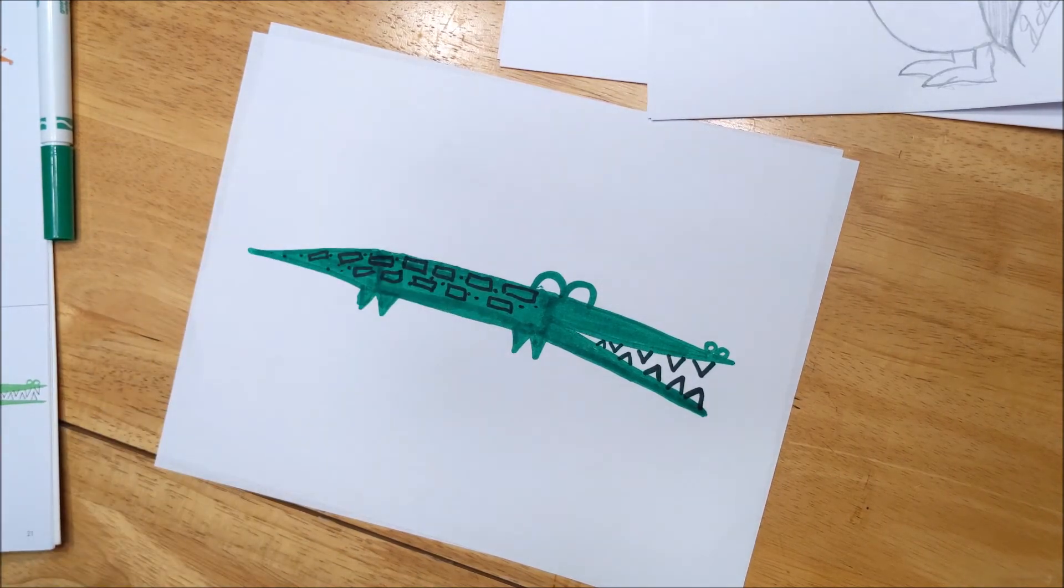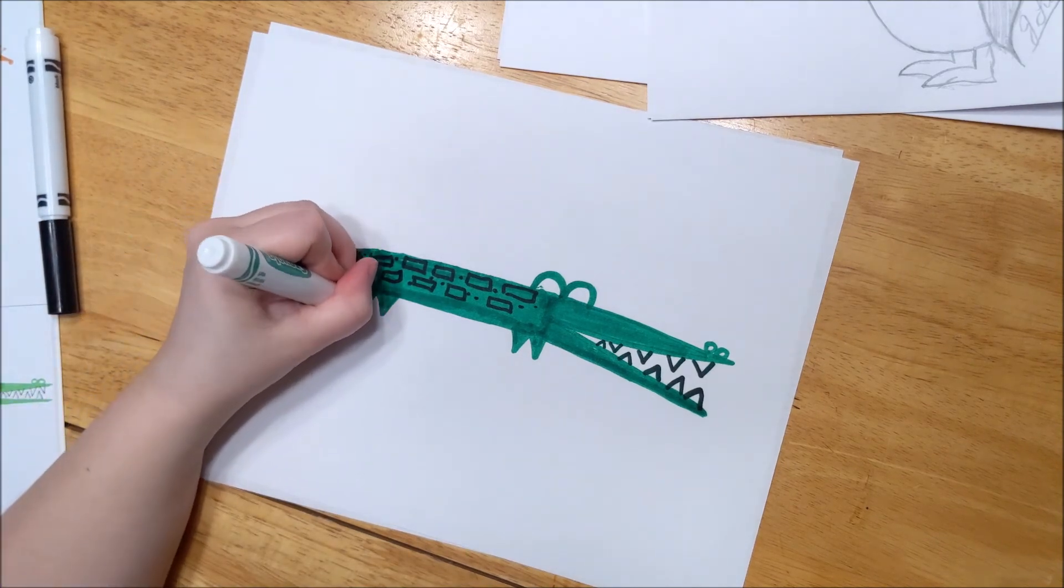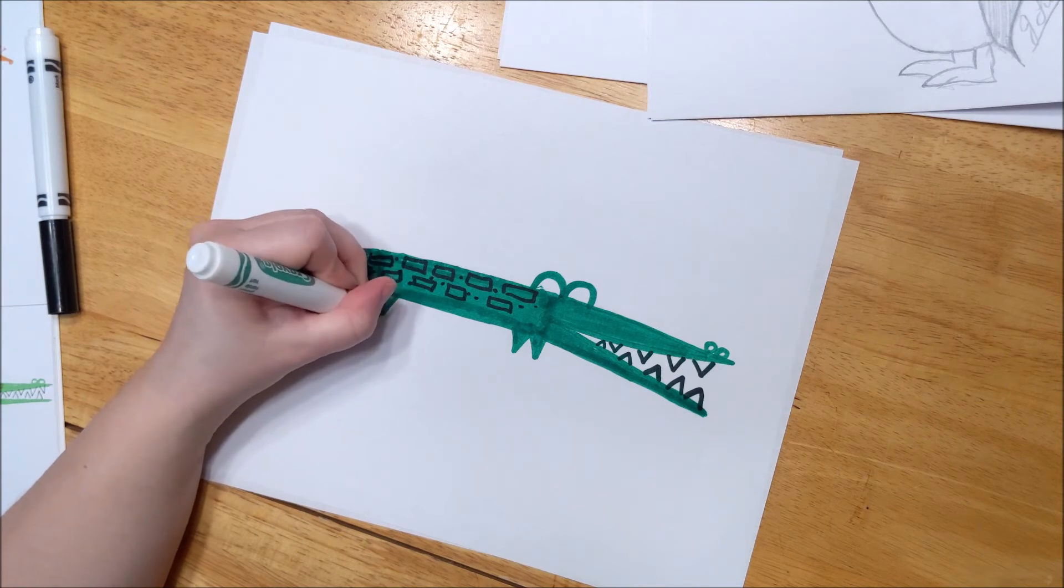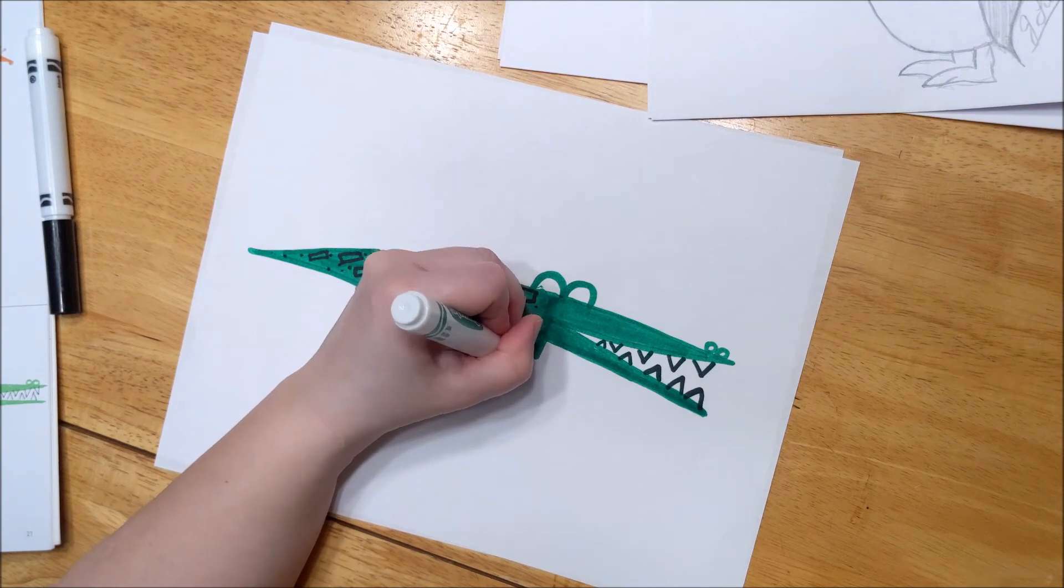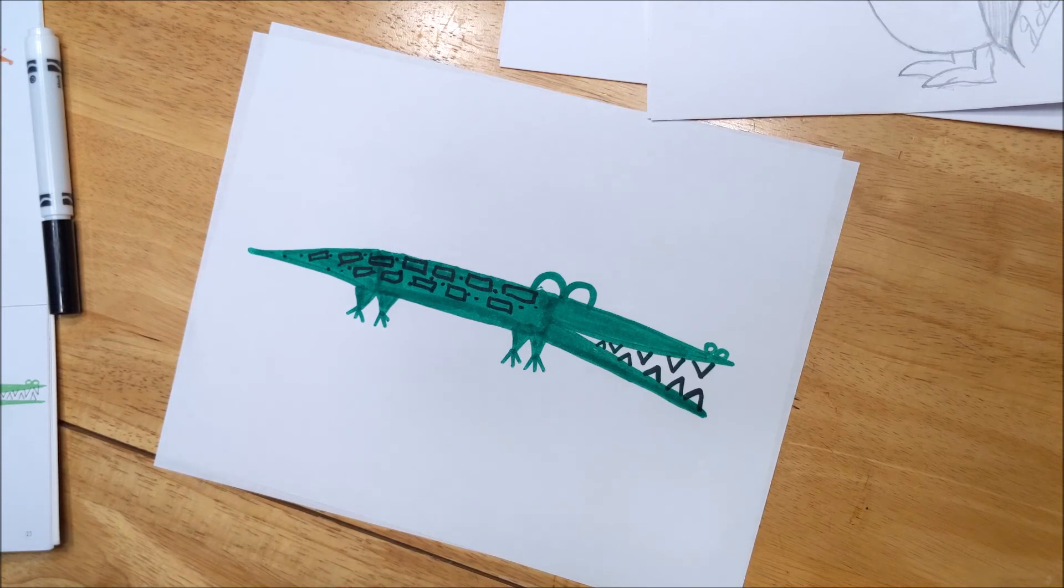All right, and then after that, we're going to do little lines for his feet coming out. So there's three lines in each foot like this that are spread apart. Just like that.